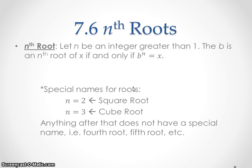Special names for roots: if you have n equals 2, that's a square root. You already know that one. And n equals 3, that's a cube root. You may or may not know that one. Anything after that, we don't really give a special name. You just say fourth root, fifth root, sixth root, etc.